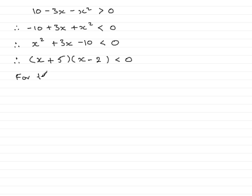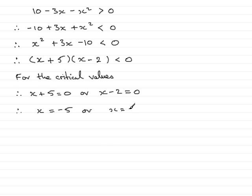for the critical values, what we have is that we treat this as if it equals 0. And if it were to equal 0, then x + 5 would equal 0 or the x - 2 would equal 0. And solving this, we would have that therefore x = -5 or x = 2.